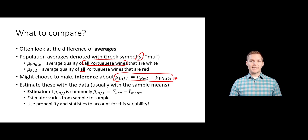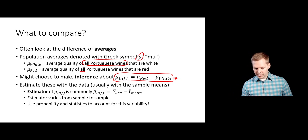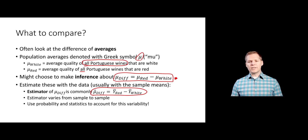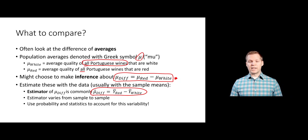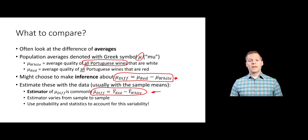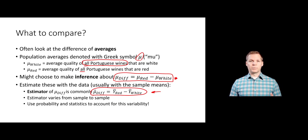What we actually have to work with is sample data. We assume our sample data comes from the population of interest — all Portuguese wines. We need to use our sample data to make a statement or claim about these population-level values, estimating them with sample means. But we can't just look at the sample means and say the population means are different too, because these estimators vary between samples. If we got another sample of Portuguese wines, we wouldn't get the same value every time. We need to account for that variability via probability and statistics.